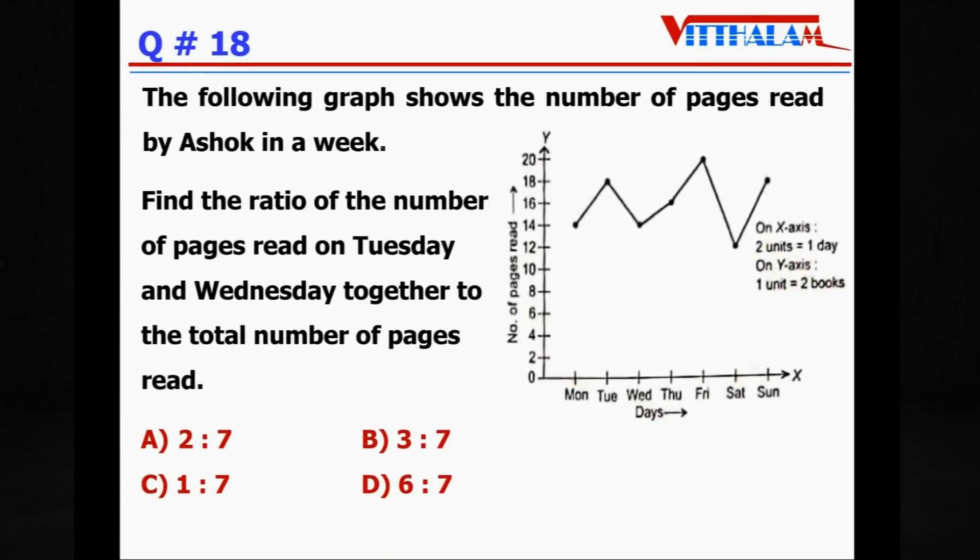Next. The following graph shows the number of pages read by Ashok in a week, so Monday to Saturday days and number of pages on y-axis. Find the ratio of the number of pages read on Tuesday and Wednesday together to the total number of pages read. That means we have to first find out how many pages read on Wednesday.